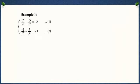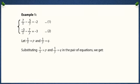Look at this pair of equations. These are not in the linear form — the variables are present in the denominator. In these equations, let's substitute 1 upon x with p and 1 upon y with q and see what happens. After making the substitutions, we see that both equations are converted to linear equations. Now we can solve the pair of equations using any of the algebraic methods.